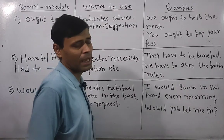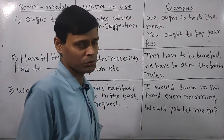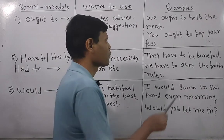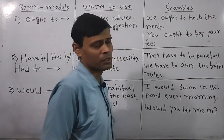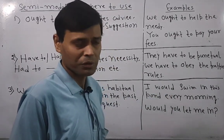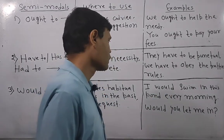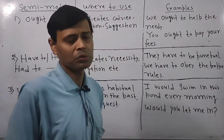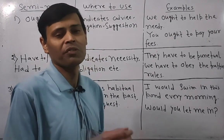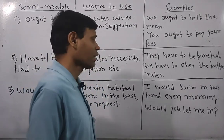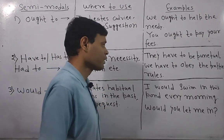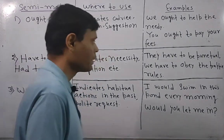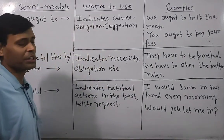These modals — 'have to,' 'has to,' 'had to' — are used for necessity-driven obligation. For example: 'They have to be punctual about time' and 'We have to obey the traffic rules' are all related to some kind of necessity driven obligation.